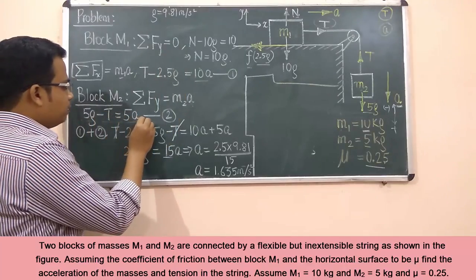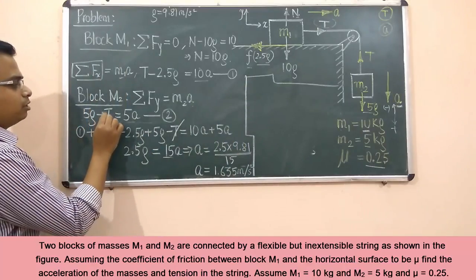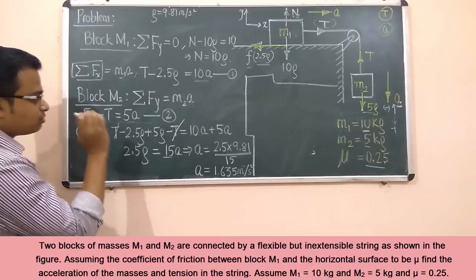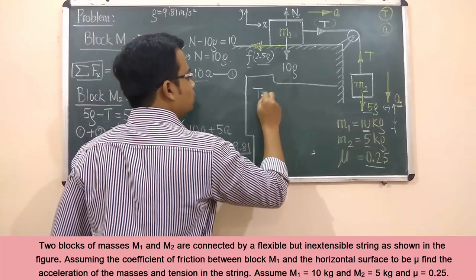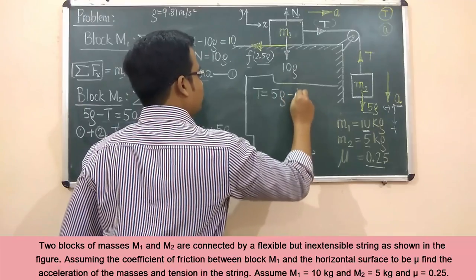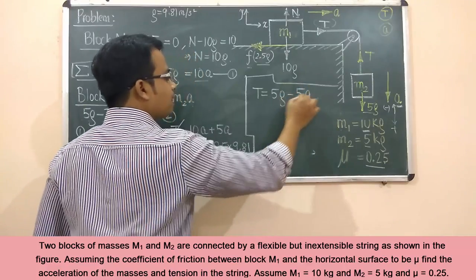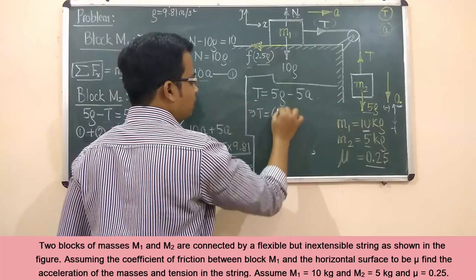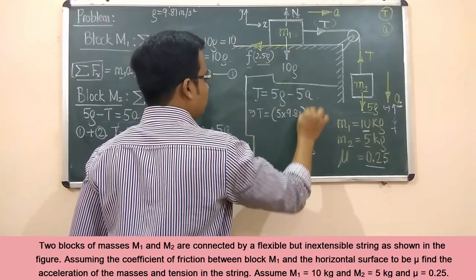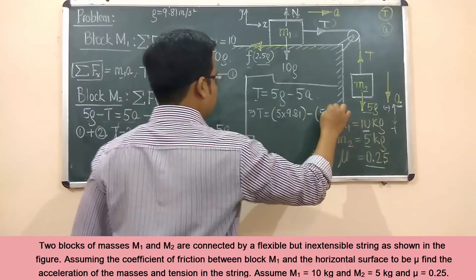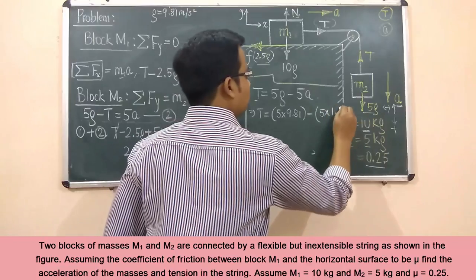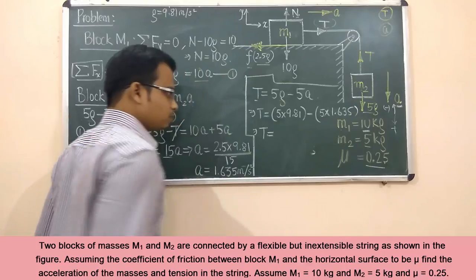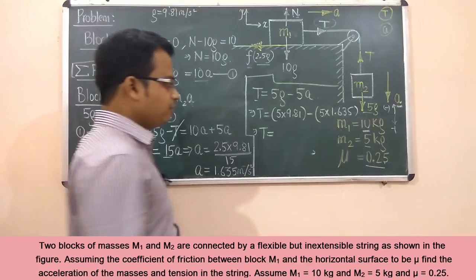Now substituting the acceleration into Equation 2 to find tension T. Rearranging: T = 5g minus 5a. Substituting values: T = 5 × 9.81 minus 5 × 1.635, which gives T = 40.875 Newtons.